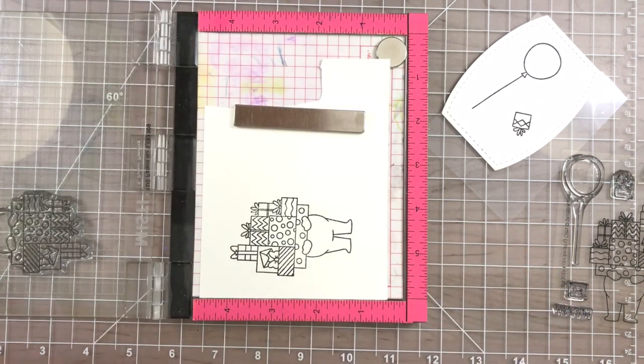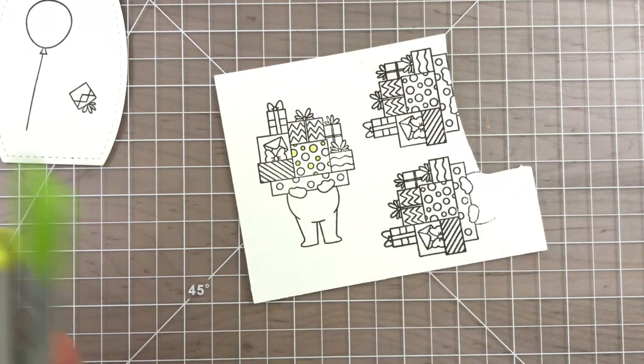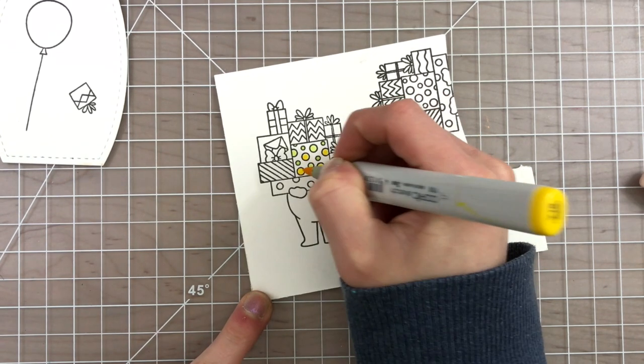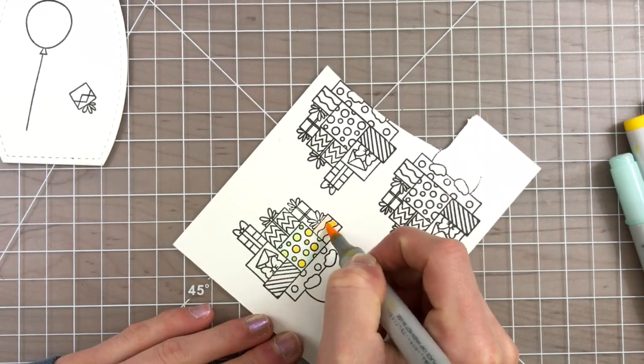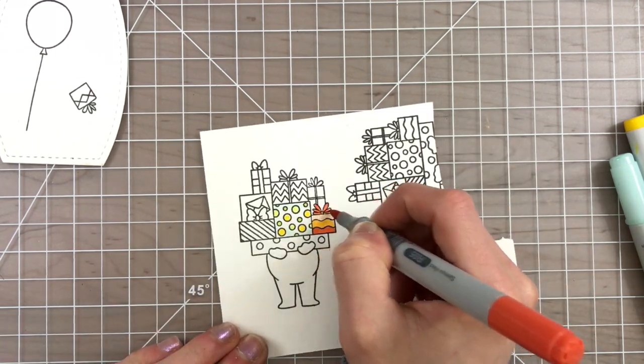I chose a variety of different colors all coordinating as best as I could with the colors that are in the satin confetti sequin mix from Studio Katia. I chose that particular sequin mix because I loved the bright and happy colors and I wanted these Copic markers to match the colors that are in the sequins.